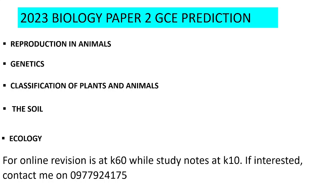That brings us to the end of the 2023 Biology Paper 2 GCE prediction. For online tuitions, the cost is 60 kwacha, and study notes plus a course outline are 10 kwacha each — 20 kwacha total. You can contact me on 0779240175. If you are serious, you can actually pass with the time remaining. Wishing you all the best in your exams — bye and peace.